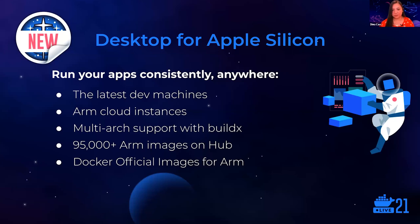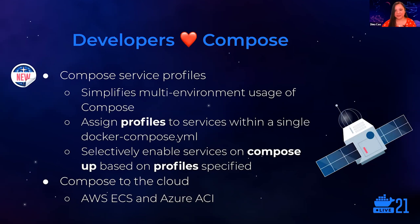With Docker Desktop for Apple Silicon, you can develop on the newest dev laptops with the same experience you've come to expect from Docker. If your team is developing for ARM-based cloud environments like AWS Graviton, you'll now be able to do end-to-end ARM development. With Docker BuildX and its multi-architecture build support, your whole team can continue to collaborate whether using x86 or ARM. With over 95,000 ARM images on Hub, including many Docker official images, we think you'll find what you're looking for. So many developers love Compose — surveys show two-thirds of Docker users use Compose, with more than 800,000 Compose files just on GitHub.